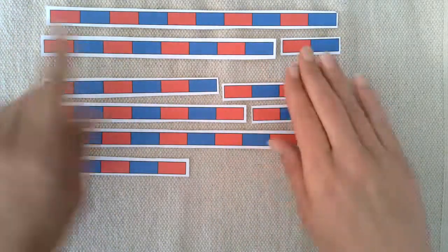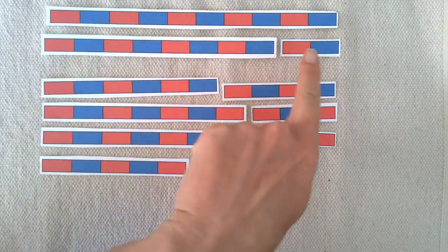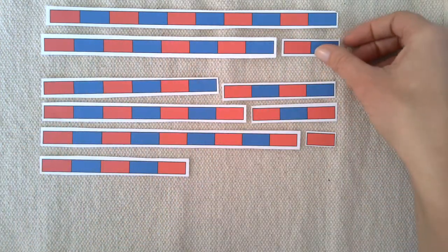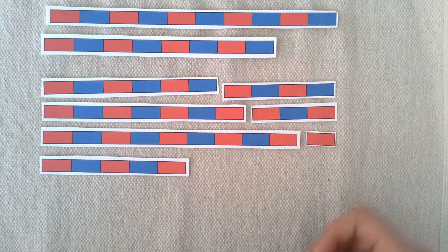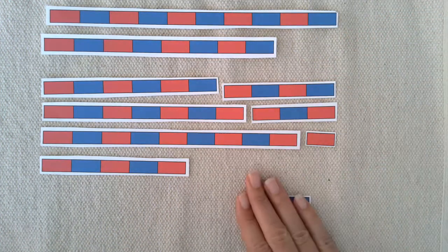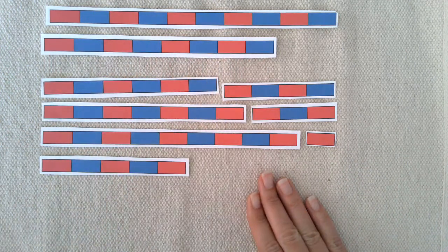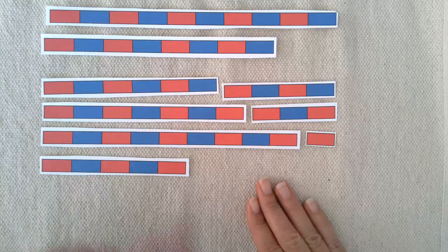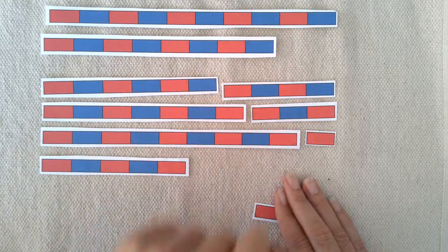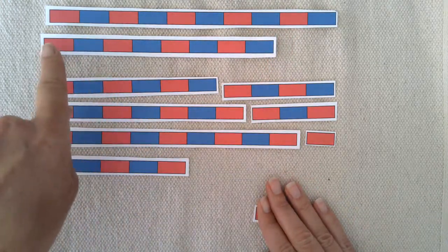So here we have 10. If I take two away, I have eight left. We call that subtraction. 10 minus 2 equals 8.